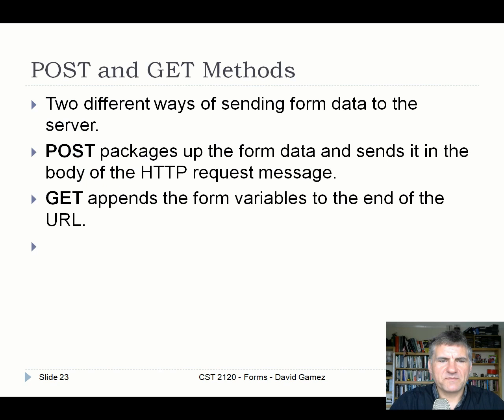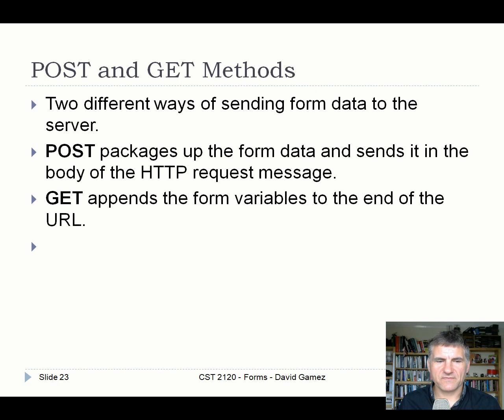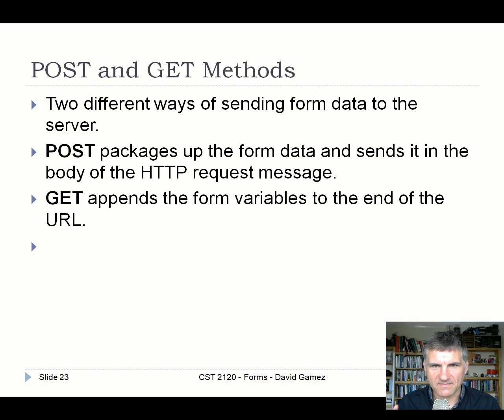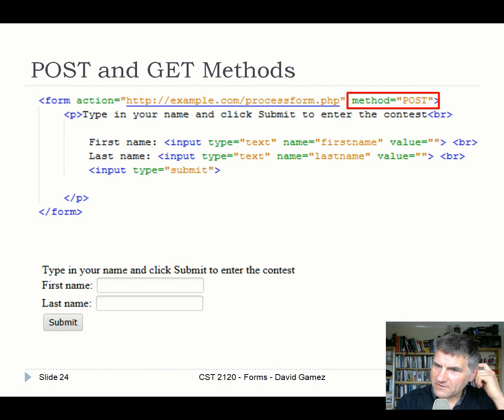There are two ways of sending form data to a server: POST and GET. POST puts all form data — the key-value pairs — inside the body of the HTTP request message. HTTP messages have both a body and a header. GET appends the form variables to the end of the URL. You specify the method in the form element.